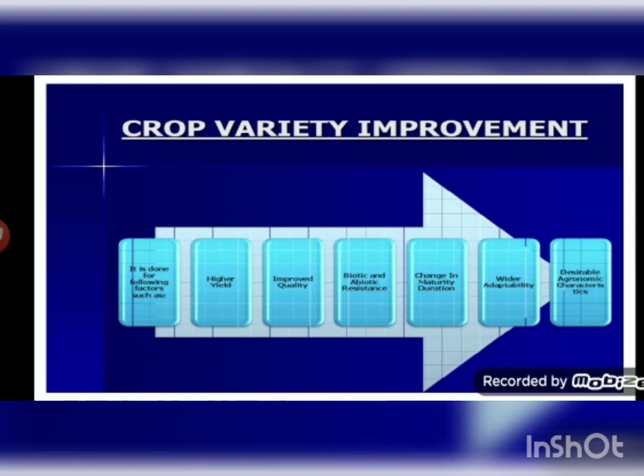Improved quality consideration varies from crop to crop. In wheat, baking quality is important; in pulses, oil quality is important; and in fruits and vegetables, preserving qualities are important. Such improvements can be done by using good quality seeds and by hybridization.